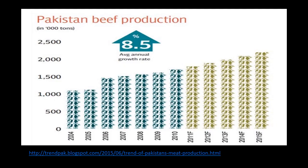Against this Muslim population, the countries that are global halal meat providers are majority non-Muslim. Among the top 10 halal meat exporters there is Brazil, India, USA, China, Thailand, Australia, France, Russia, Turkey, and Ukraine — Pakistan is not among them. There is great potential for Pakistan in the halal meat industry. Malaysia is projected to contribute 5% of its GDP from this sector by 2020. Pakistan's beef production has an annual growth rate of 8.5% from 2004 to 2015.